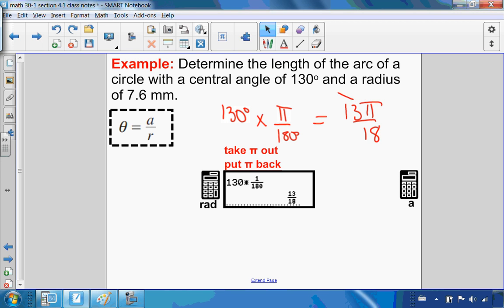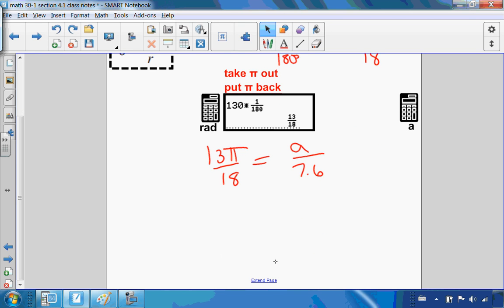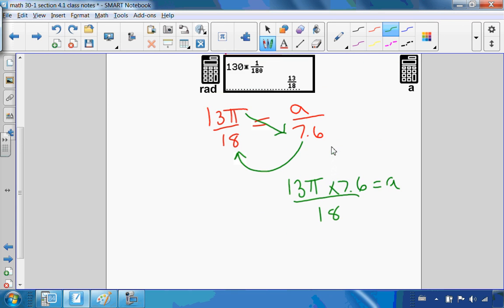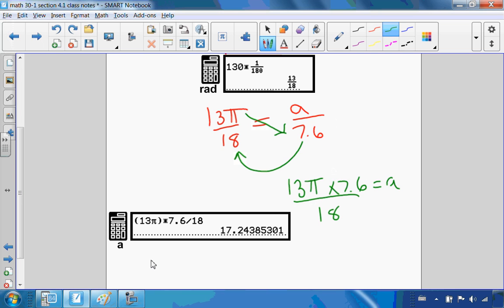In terms of my formula, this is now theta. So theta, 13π over 18, equals arc length, that's what I'm trying to find, out of radius, which is 7.6. To solve for this, I'm going to cross multiply and divide. 13π times 7.6, all divided by 18, will give me my arc length. I get 17.2 millimeters.